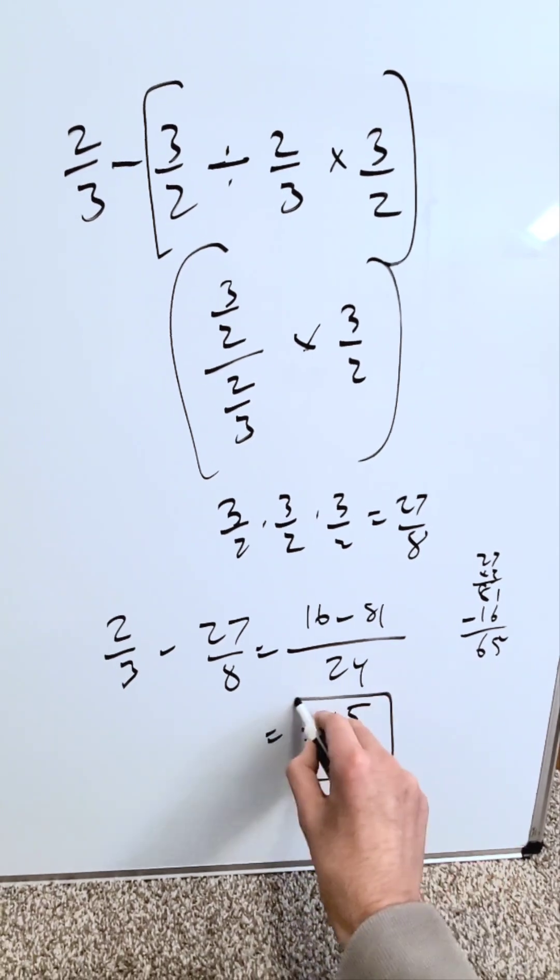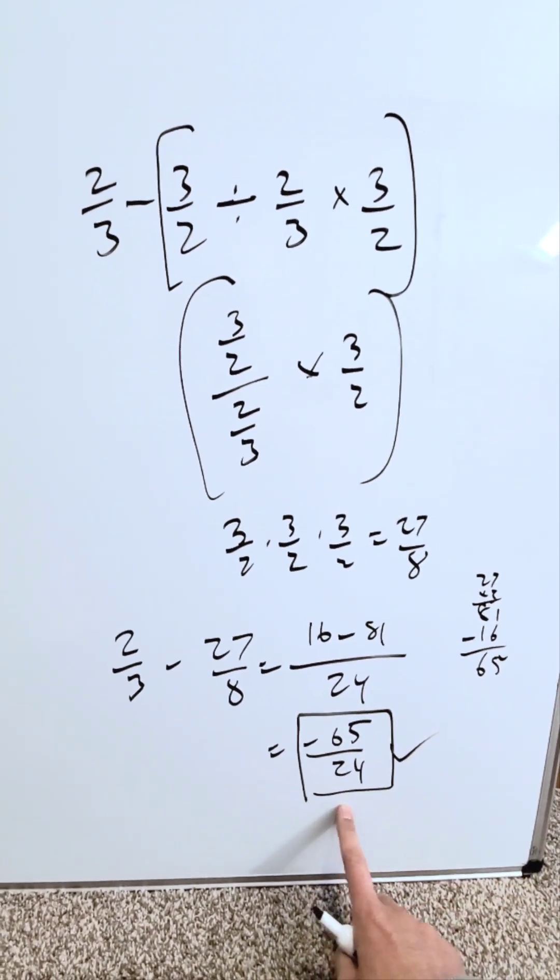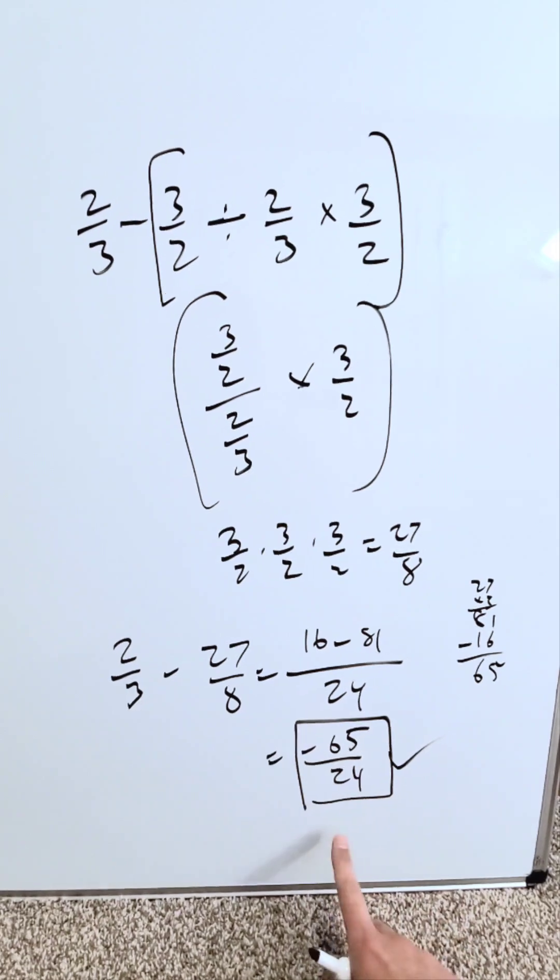If you want to convert this into a mixed fraction you can or just leave this as your end result and it will be correct. Minus 65 over 24.